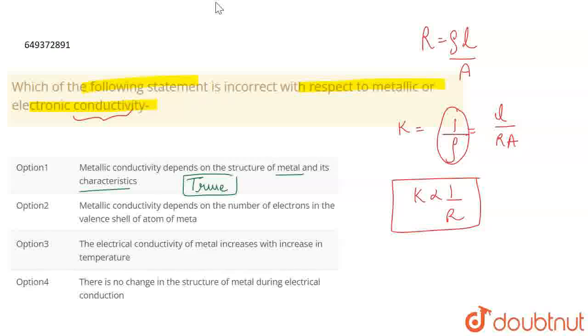The metallic conductivity depends on the number of electrons in the valence shell of the atom of the metal. This statement is correct.